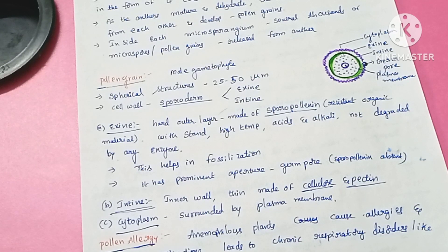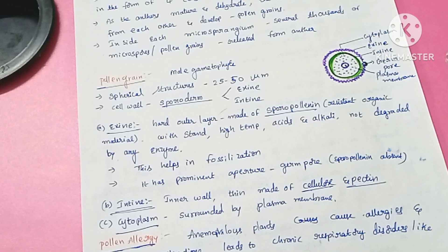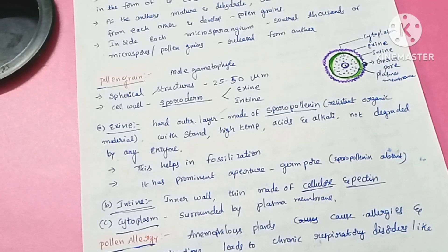Sporopollenin is found in the exine layer. Pollination can occur by different types of agents — there are biotic agents and there are abiotic agents. The pollen grains are protected by sporopollenin during pollination in different hazardous environments.